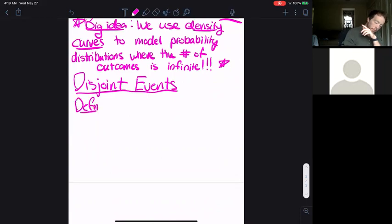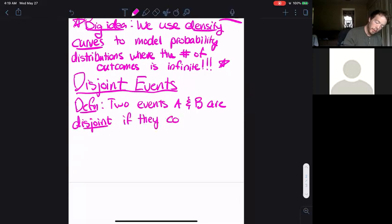Next thing I want to talk about. Let's start with the definition. Two events, which I'll call A and B, are disjoint if they contain no outcomes in common.